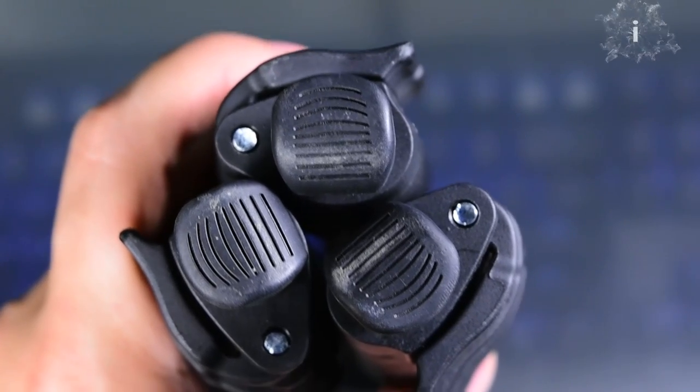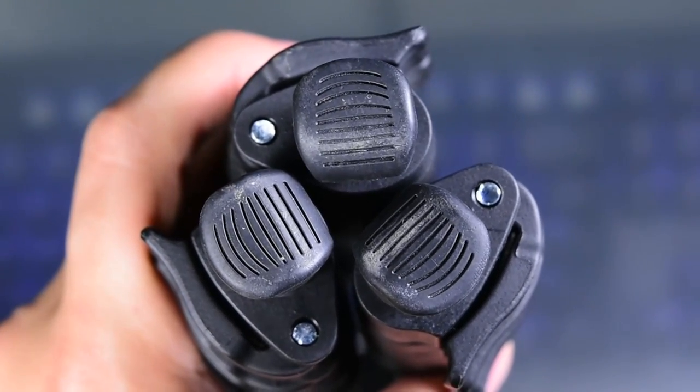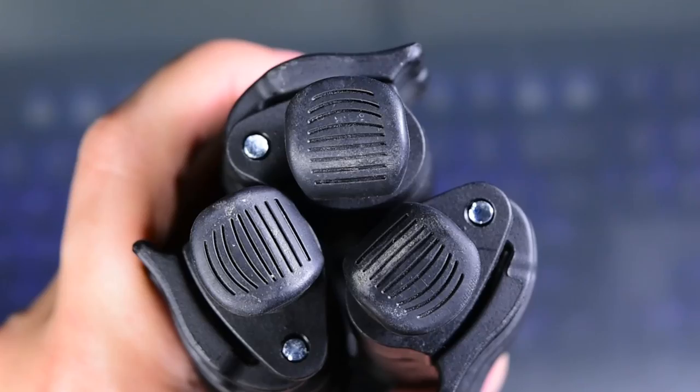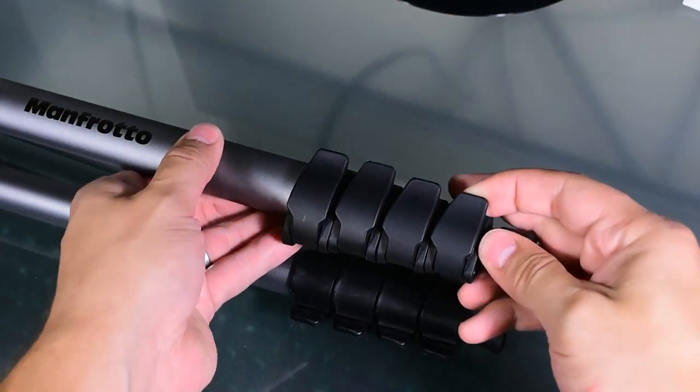As you can see, the legs on the tripod have ribbed rubber feet ensuring that it won't lose its grip on most surfaces. The legs are extended by opening the individual latches and just pulling on the legs.